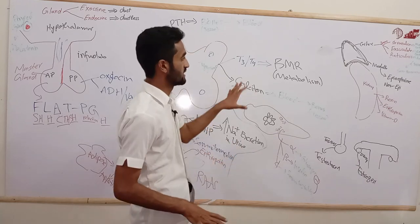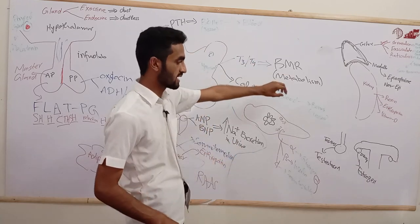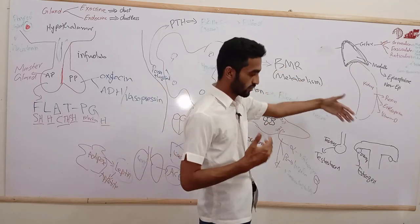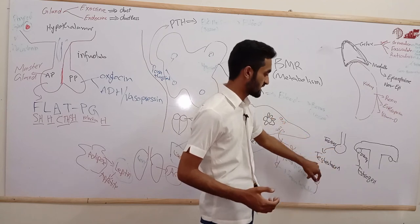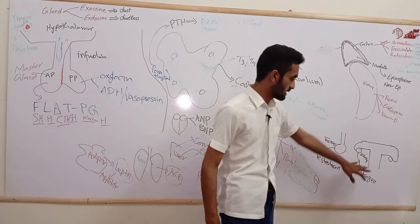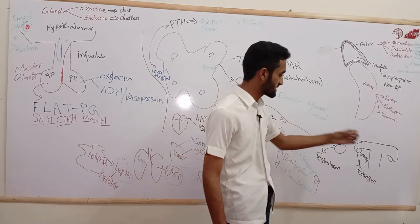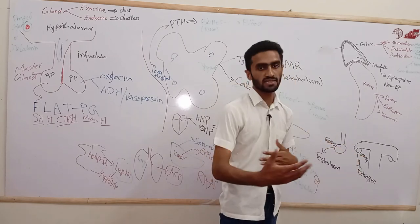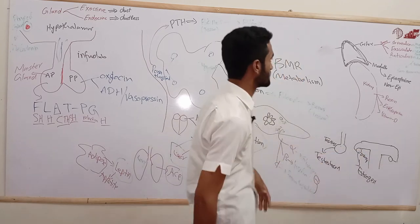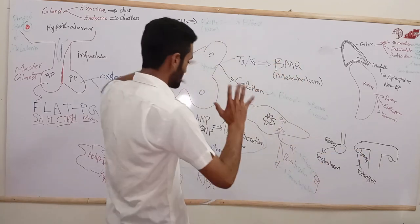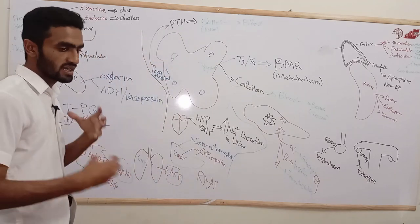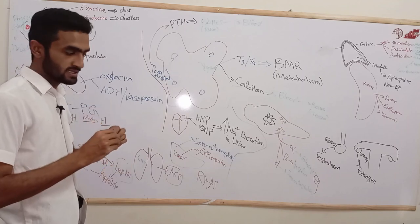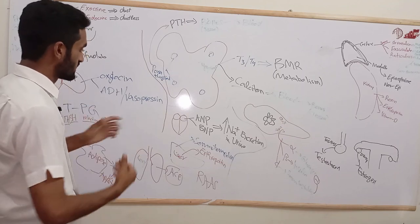We have separate lectures on each major gland. For the gonads: the testes secrete testosterone in males. In females, the ovaries secrete estrogen and progesterone. These are the basic hormones secreted by endocrine organs and endocrine tissues.